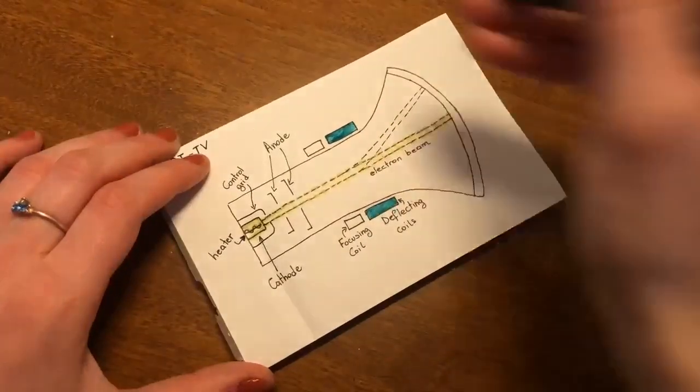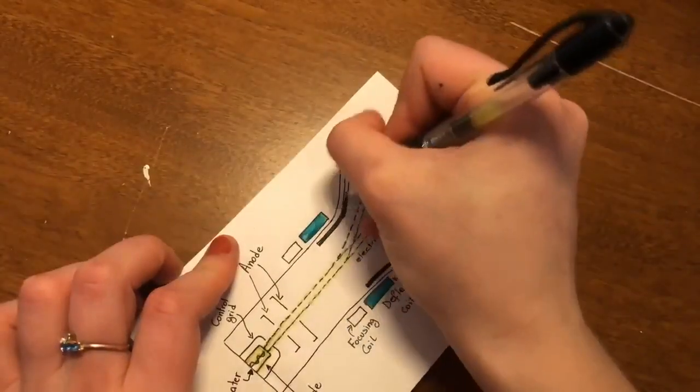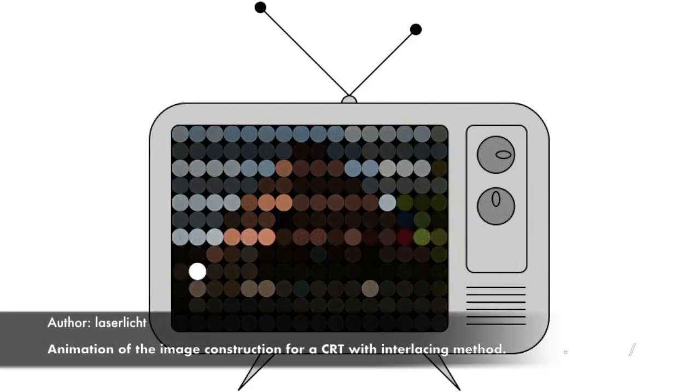The term cathode ray was used to describe electron beams before it was understood that what was emitted from the cathode was in fact a beam of electrons. When the electron beam hits the phosphor it makes the screen glow. The beam sweeps the screen across and down as shown in this animation.